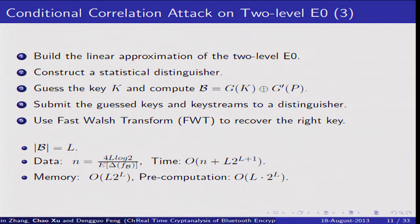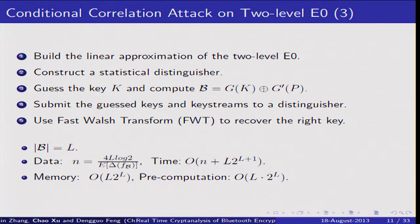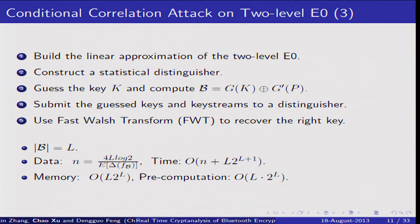This is the procedure of the attack. First, we compute the linear approximation of two-level E0. Second, construct a statistical distinguisher. Third, we can get the key K and compute the output of the LFSR. Fourth, submit the guessed key and the key stream to the distinguisher. Last, we use the Fast Walsh-Hadamard Transform to recover the real key. If we assume the bit length of condition B is L, we can get the complexity of this attack from the statistical distinguisher and FWT algorithm.